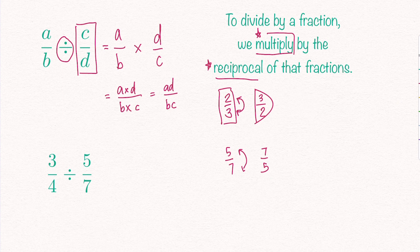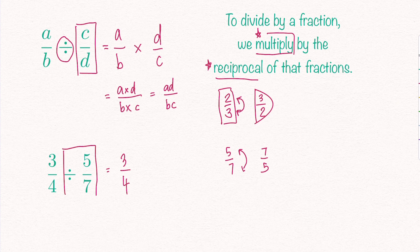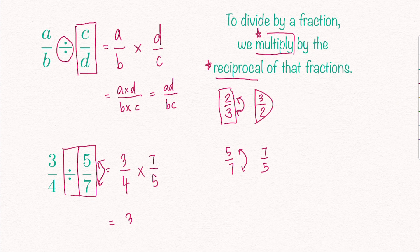Now let's take a look at an example with numbered fractions. We have 3 over 4 divided by 5 over 7. First step: find the reciprocal of the second fraction, then multiply. So I'm going to leave my first fraction of 3 over 4 as it is, change the division sign to a times, then find the reciprocal of 5 over 7 by flipping it, so it becomes 7 over 5. Now I times the numerators: 3 times 7 is 21, and the denominators: 4 times 5 is 20.